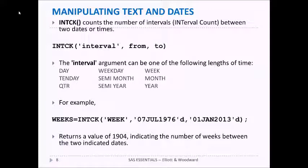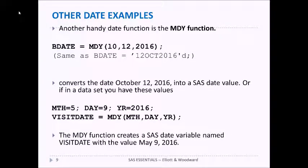Other date examples include the MDY function, a handy function where you can enter three different values like 10, 12, 2016, and it converts that into a variable called BDATE. It's the same as saying BDATE = '12OCT2016'd. Or you can create variables for month, day, and year and use those variables in the MDY function. There are several ways of creating a SAS date.